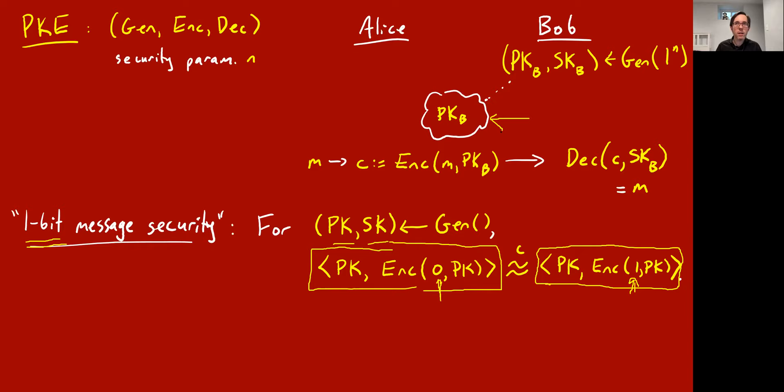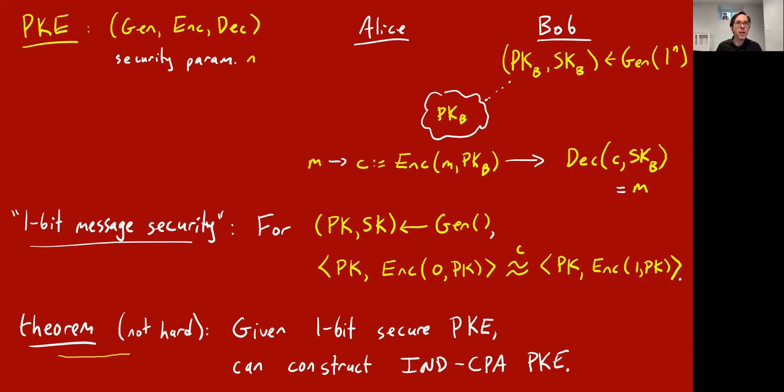A theorem — which is actually not that hard — is that if you're given a one-bit secure public key encryption scheme, you can construct from it a public key encryption scheme with much better multiple-message chosen-plaintext-attack security. So if you want to get awesome public key encryption, you just have to get one-bit secure public key encryption, which gives you something easier to aim for.